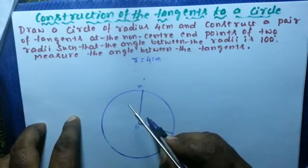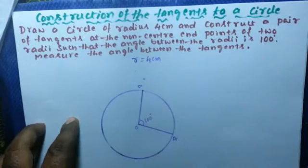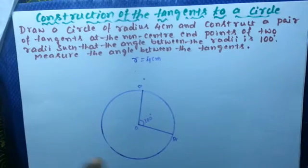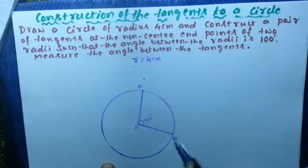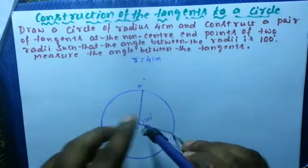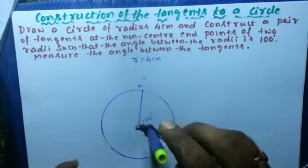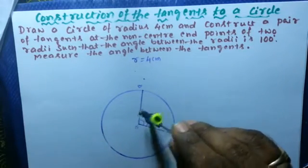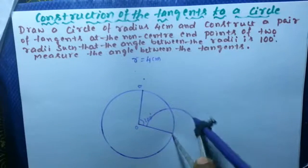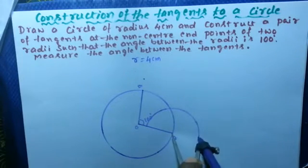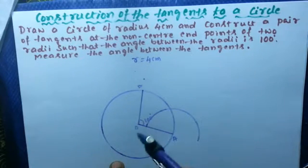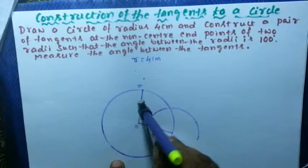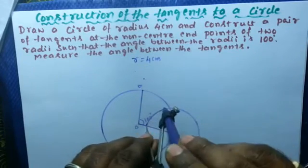The angle between these two radii is now 100 degrees. Now we can construct the tangent at the end of each radius. Take more than half the length of radius OA and draw a semicircular arc — it should touch the radius. Where it touches, take a point and cut this arc.